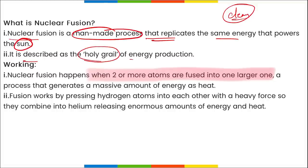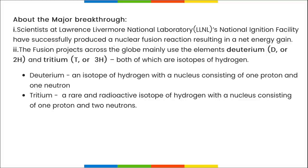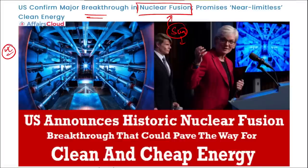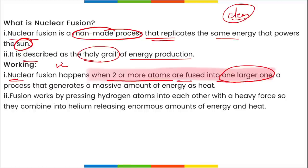Nuclear fusion is a man-made process that replicates the energy that powers the sun. It occurs when two or more atoms are fused into one larger atom, generating a large amount of energy as heat. The project mainly uses deuterium, which is an isotope of hydrogen. Nuclear fission, for comparison, is when a single atom is divided into smaller atoms.